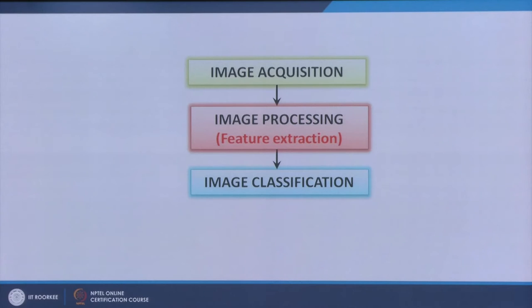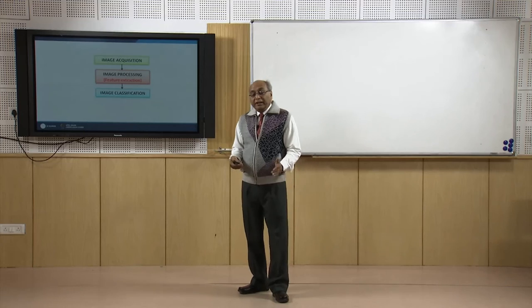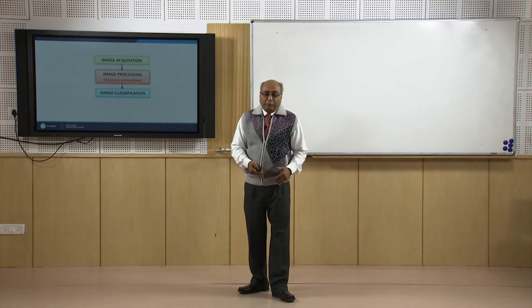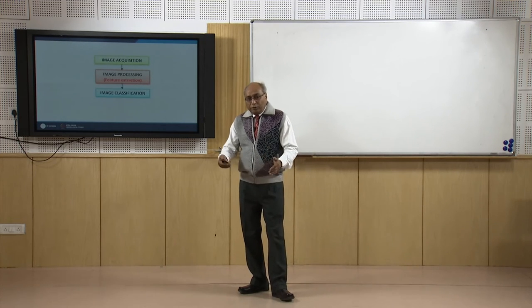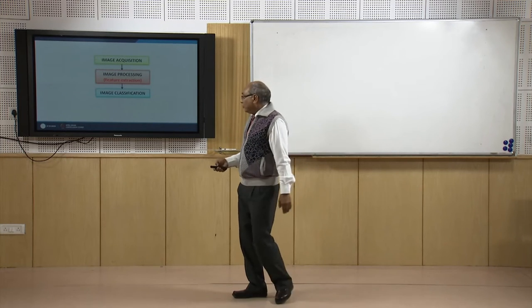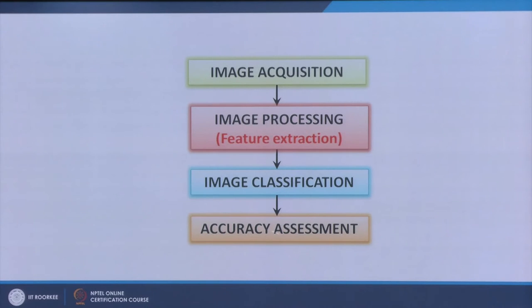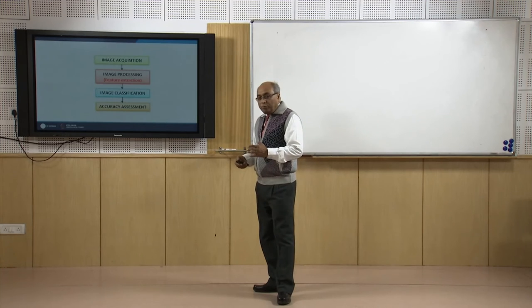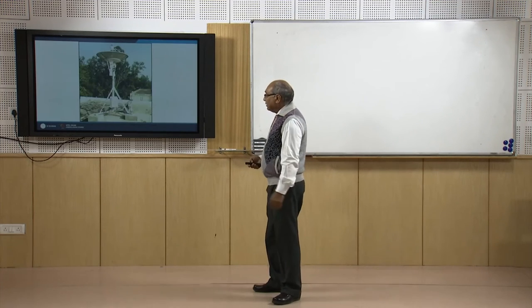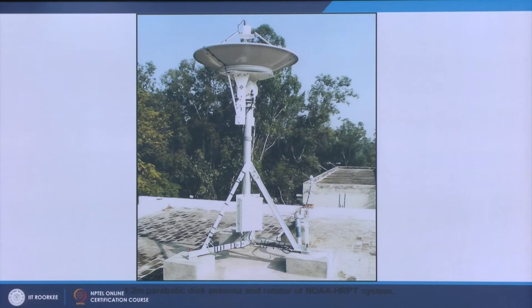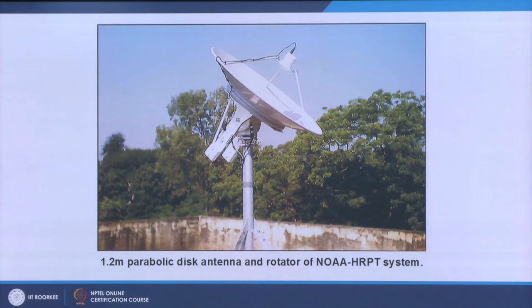A third step is image classification — after enhancement one may go for image classification, creating output maps such as land use maps, forest density cover maps, lithological maps, soil cover maps, and so on. Finally, one assesses accuracy after image classification. These are the four broad steps: data acquisition, image processing, image classification, and accuracy assessment — done through a satellite earth station with rotating and tracking antennas, a receiver, and a computer system.